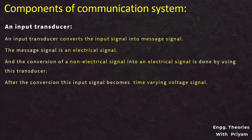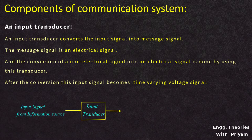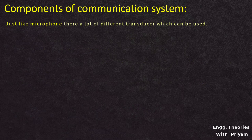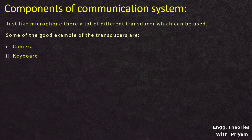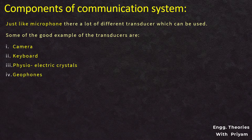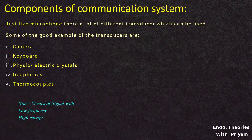A microphone converts sound waves into electrical signals with the help of a diaphragm, and these electrical signals can be used for further processing. So the input to the input transducer is a non-electrical signal, and the output is an electrical signal which can be used as a message signal. Other examples of transducers include cameras, keyboards, piezoelectric crystals which convert the formation of solid crystals to electrical signals, geophones which convert ground movement into an electrical signal, and thermocouples which convert the electrical temperature of a metal junction to electrical voltage. The input signal to the transducer is a low frequency, high energy, non-electrical signal, and the output signal of the transducer is a low frequency, low energy electrical signal.